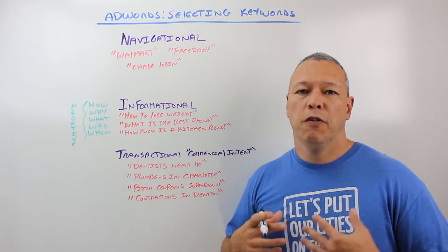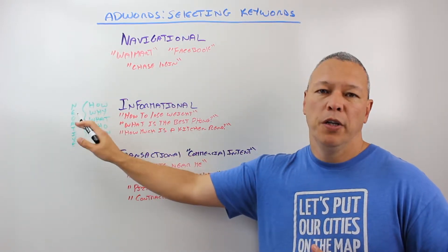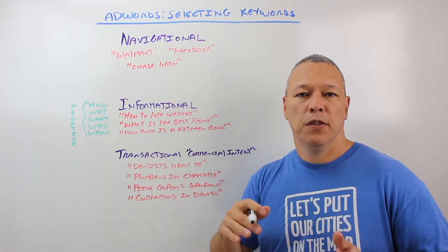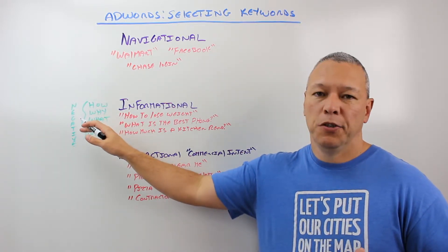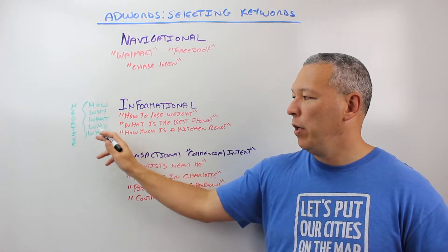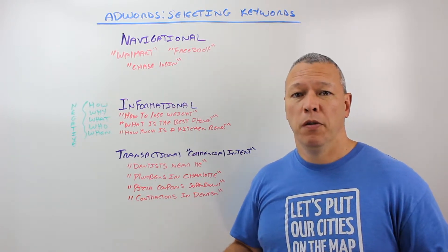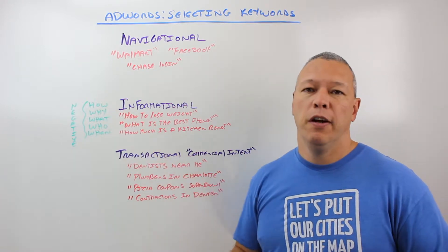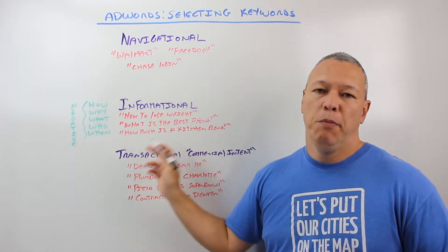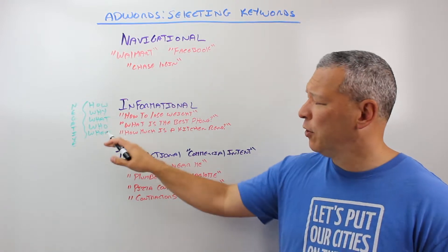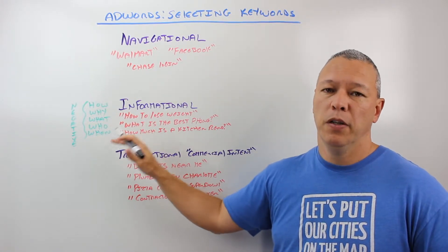Something I do for most of our campaigns is in Google AdWords you can add something called a negative keyword. You can add a keyword, and if somebody types in a search term that contains that keyword, your ad won't show up. So I'll add words like how, why, what, who, and when as negative keywords. So whenever somebody types in 'why would I hire a plumber,' the negative keyword will get triggered and my ad won't show. That's a quick way to avoid these informational types of searches. These make up the bulk of searches in Google and can eat your budget very quickly if you're not careful.